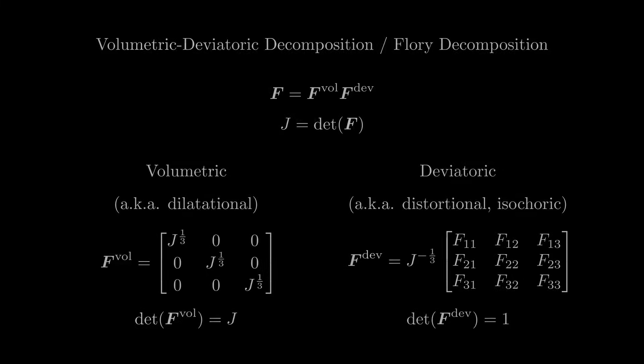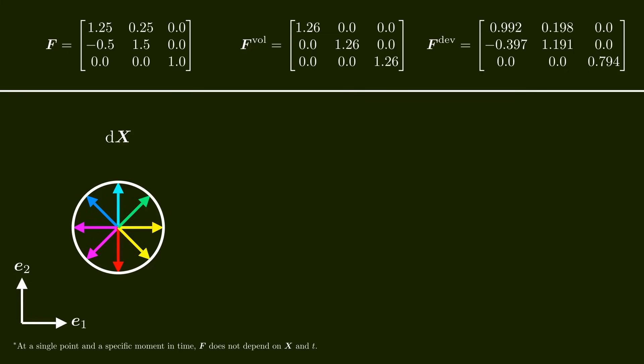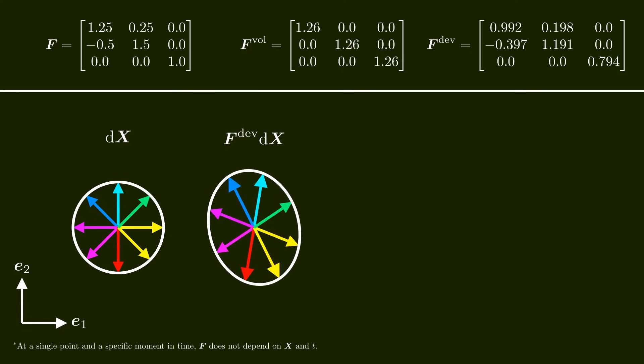Let's visualize this with an example. Here is a deformation gradient and the corresponding volumetric and deviatoric contributions. Note that we consider the deformation gradient at a specific point at a specific moment in time, such that F doesn't depend on x and t. Here you can see some undeformed line elements d capital X, with a circle around the arrow tips — you can think of this as an infinitely small sphere, though in this 2D visualization you only see a cross-section. If we multiply the deviatoric part of F with the undeformed line elements, the line elements deform and the small sphere changes in shape. However, because the determinant of the deviatoric part is 1, the small sphere is not changing in volume. It may look like the volume is changing, but that's only because there is also some out-of-plane deformation we can't see in this 2D illustration.